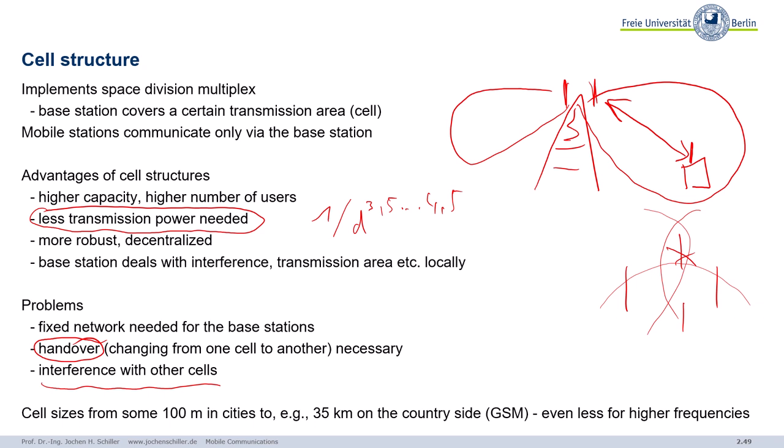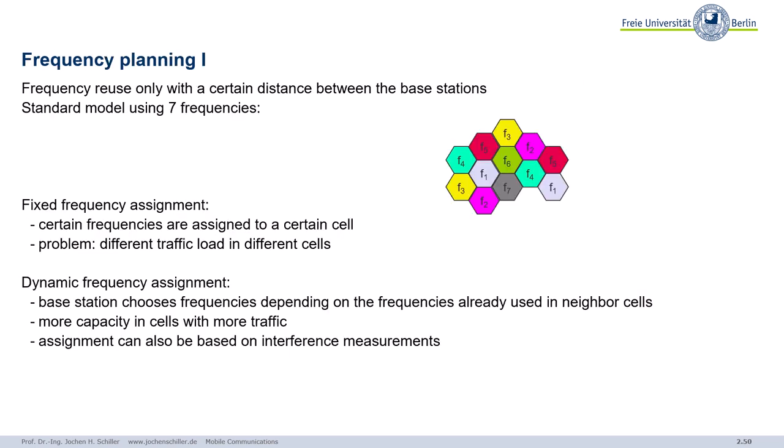With lower frequencies you can have much larger cells. For example, police use frequencies around 450 MHz to have larger cells and to penetrate the walls of buildings so the system still works in a basement. So cell sizes vary significantly depending on frequency.